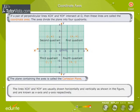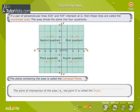The lines XOX' and YOY' are usually drawn horizontally and vertically, as shown in the figure, and are known as x-axis and y-axis respectively. The point of intersection of the axes, i.e., the point O, is called the origin.